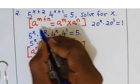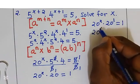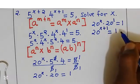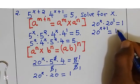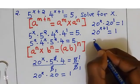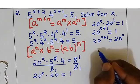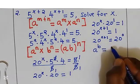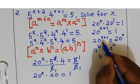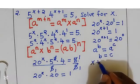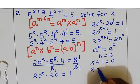According to the exponential rule, since the bases are the same, we are going to add the powers. That gives us 20 power x plus 1, equal to 1. We know that any number to the power 0 equals 1, so I'm going to write this 1 as 20 power 0. So 20 power x plus 1 equals 20 power 0. Since the bases are the same, the powers are the same, meaning x plus 1 equals 0. Subtracting 1 from both sides, x is equal to minus 1.